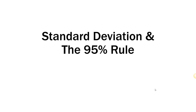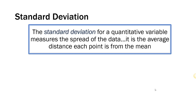Hi class! In this video, I'm going to tell you everything you need to know about the standard deviation and the 95% rule. First of all, the standard deviation is used for quantitative data to measure the spread or the variation of the data. The definition is that it is the average distance each point is from the mean.